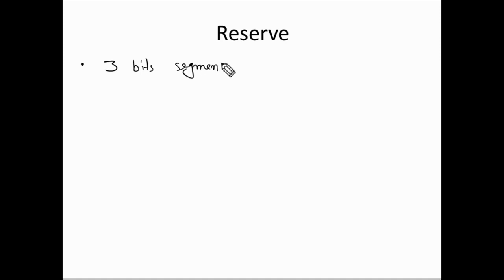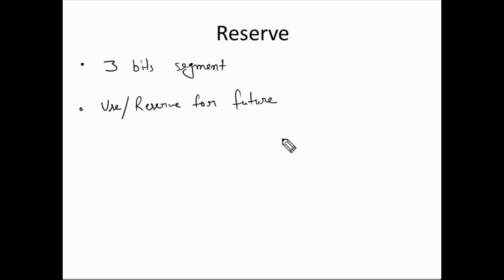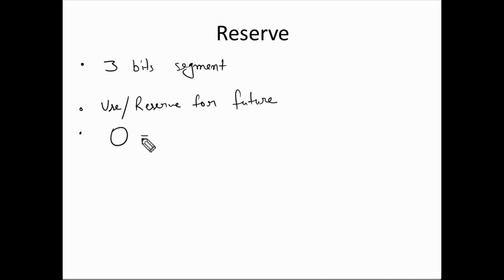Next we have the reserve field. This is simply reserved space — bits reserved for future use. It is only 3 bits in size. Whenever you see a TCP header packet, the reserve segment will always be set to 0 to indicate that it is not used and is reserved only.